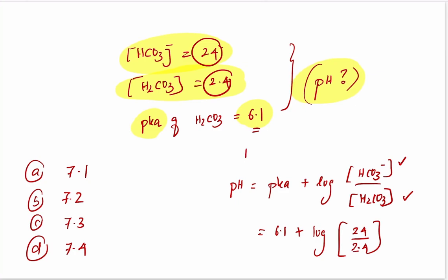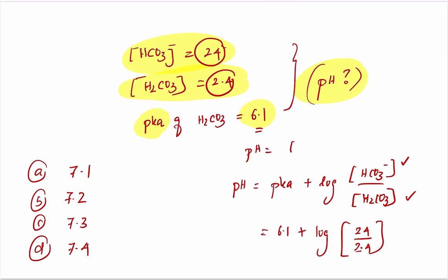pH value is equal to 6.1 plus logarithm of 10. And you all know what is log 10 - log 10 is 1. So pH is equal to 6.1 plus 1.